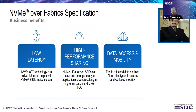NVMe over Fabric extends NVMe technology beyond local connections over wire or fabric. It can deliver latencies on par with NVMe SSDs inside servers, thereby eliminating the effect of the fabric interconnect. It can be used for shared storage solutions where storage is shared with many applications, resulting in higher utilization and lower total cost of ownership. Fabric-attached data also enables cloud-like dynamic access and workload mobility.